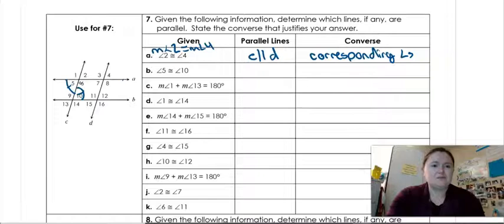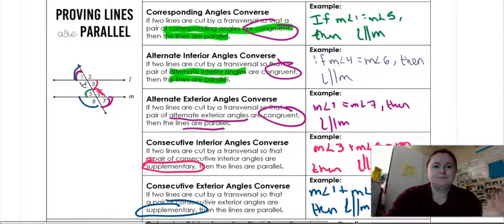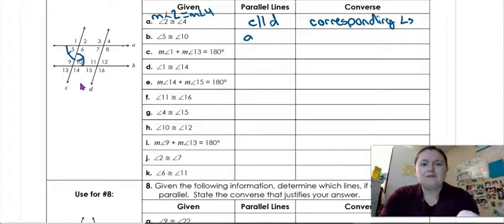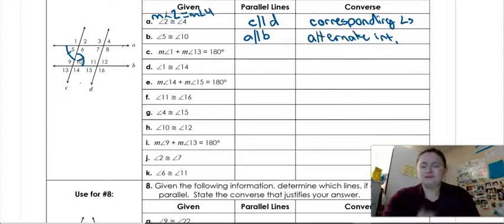And these are alternate interior angles to A and B. So that would make those parallel, because alternate interior should make congruent angles. So 5 and 10 make A parallel to B, and that is by alternate.